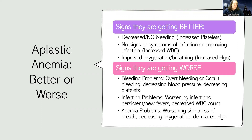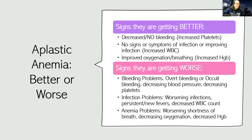Signs they're getting worse include overt bleeding problems, or occult blood found in their stool. If their blood pressure drops, they could be going into shock — a sign their platelets are critically low. For infection, watch for persistent or new fever. For anemia, look for worsening shortness of breath, oxygenation problems, and a decreasing hemoglobin.